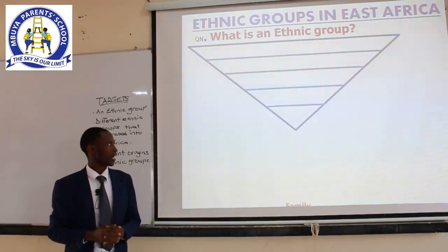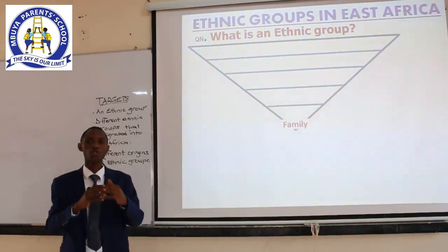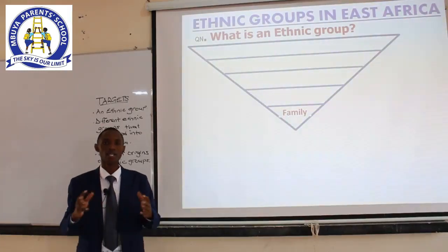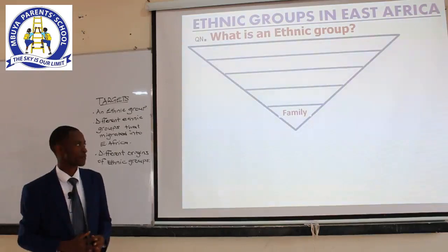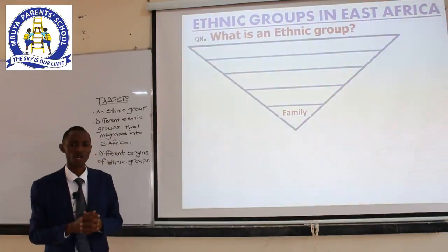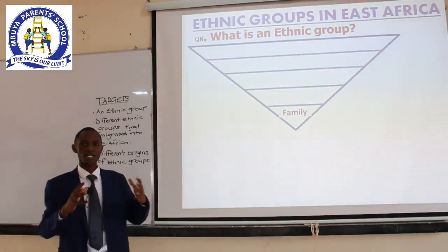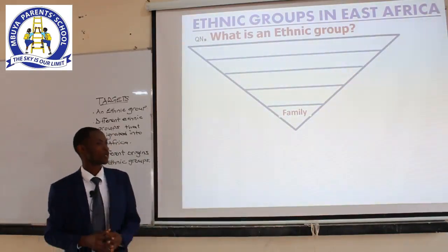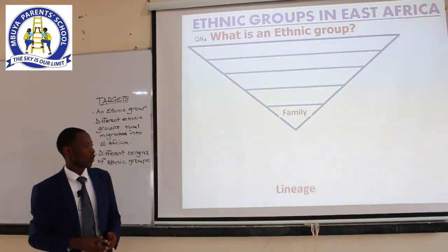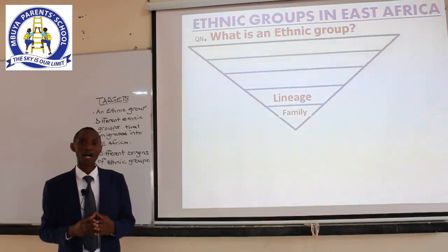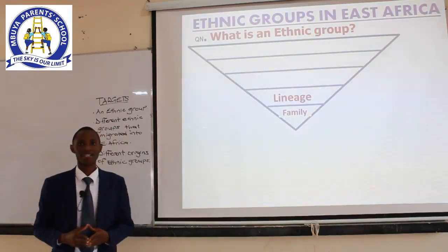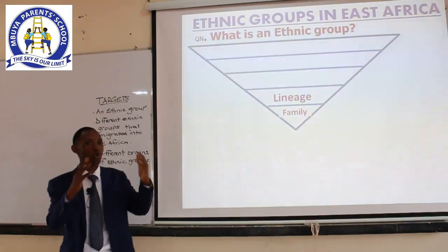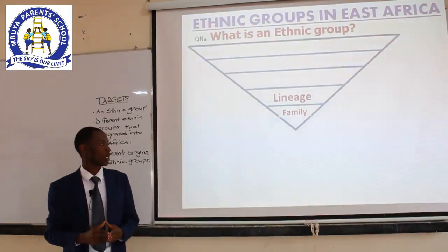When you look at a family, we do live in different families. There are those who live in a nuclear family, those who live in an extended family, and those who live in foster families. But all in all, we live in families — that is the beginning of the human social setting. From the family, everybody has got what we call a lineage. A lineage is a group of families having the same ancestor.